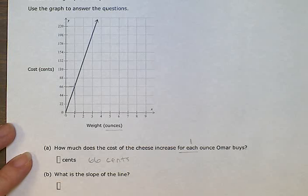And then what is the slope of the line? It's part B. Part B says, how much does it change for one ounce? That's the same answer. Sixty-six.